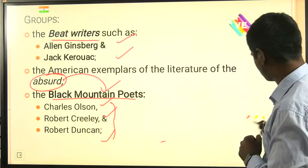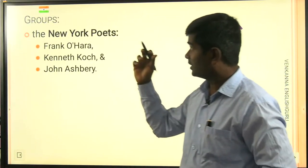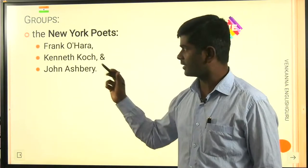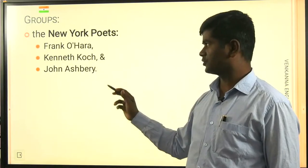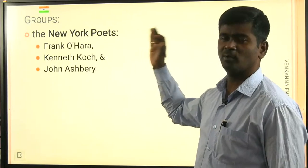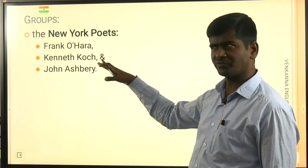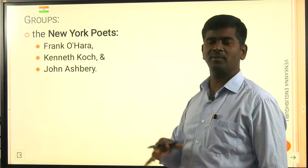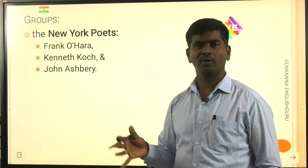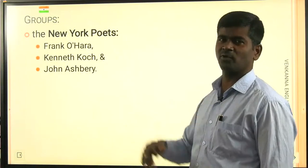Apart from the Black Mountain Poets, there was another important group called the New York Poets — Frank O'Hara, Kenneth Koch, and John Ashbery. These poets wrote a lot of poetry centered on the nature, ambience, and concepts of New York City.